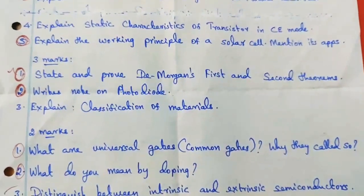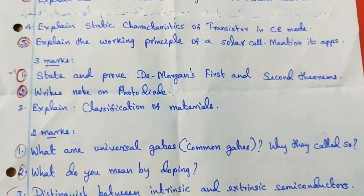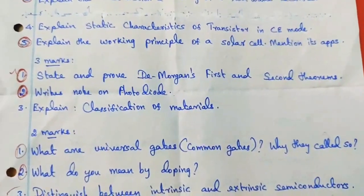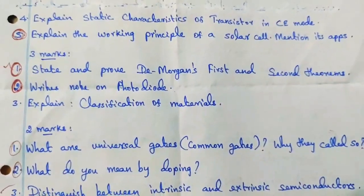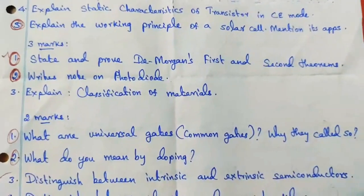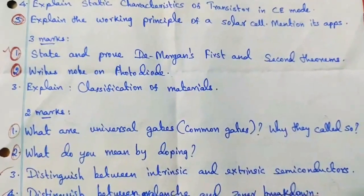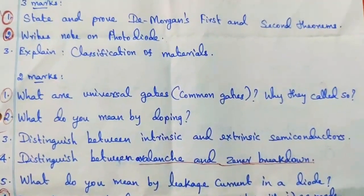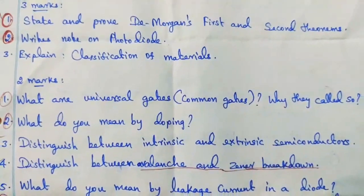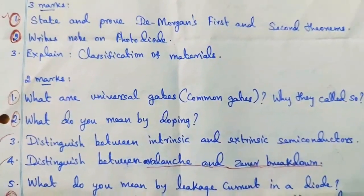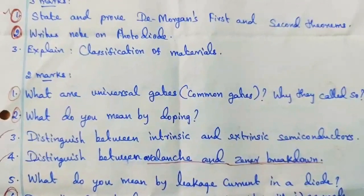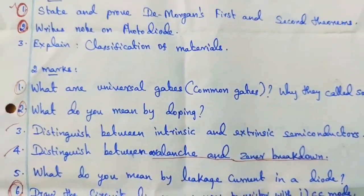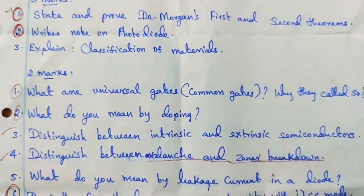1st question: what are universal gates? Also, distinguish between Avalanche and Zener breakdown — this is adequate for the 2-mark question.